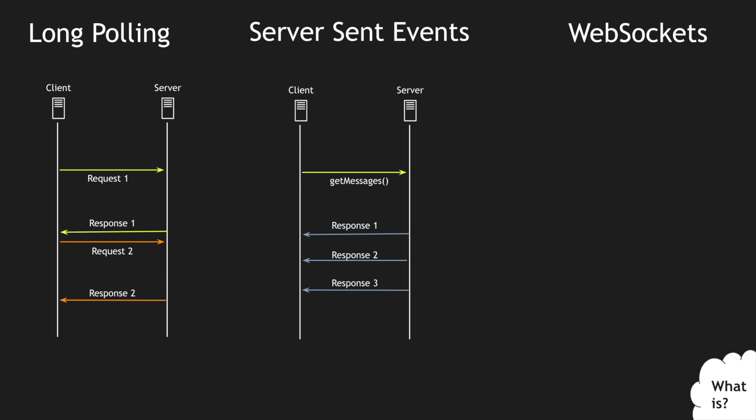The client can close the connection or the server can time out and close the connection. These are called server sent events where the flow of data is unidirectional — the client requests the server for data and the server keeps on sending data to the client. This is one predominant technique people use when they want just data from a server. One common example could be a live stream where you're just watching a cricket match, for example IPL, and we can leverage SSE to stream video to all our devices.